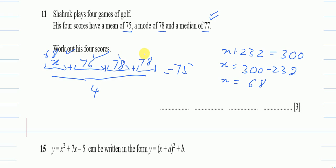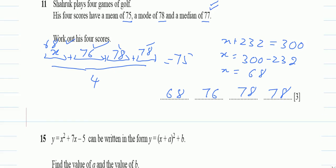Now I have all my four values. I'll write them here: 68, 76, 78, and 78.